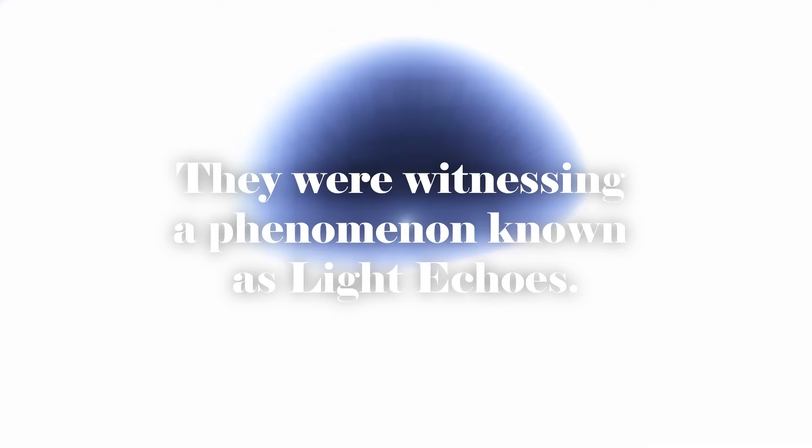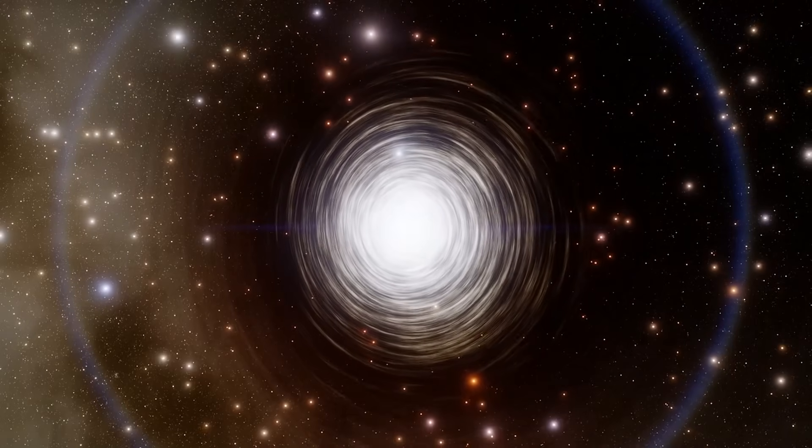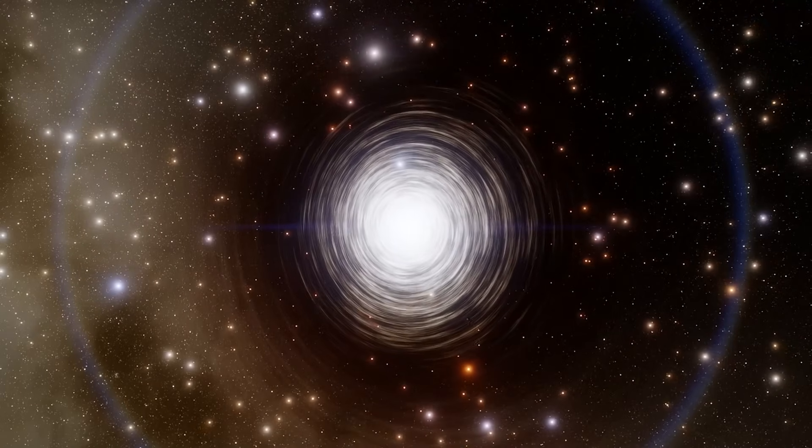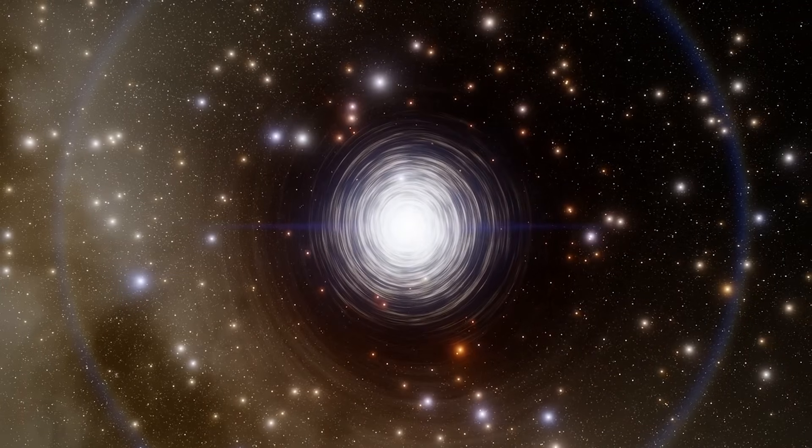They were witnessing a phenomenon known as light echoes. As we well know, a black hole possesses an extremely powerful gravitational force that even light cannot escape. However, in the vicinity of a black hole, you can often find a spinning disk of material, such as gas or dust, concentrated by its immense gravity. This material heats up as it spirals toward the black hole, emitting X-rays and other types of radiation, creating a luminous region known as a corona.